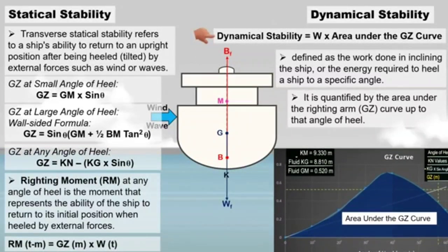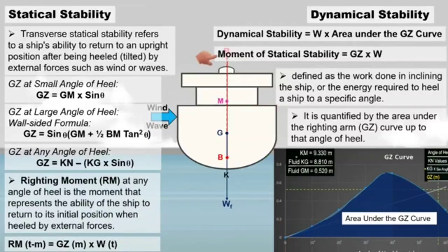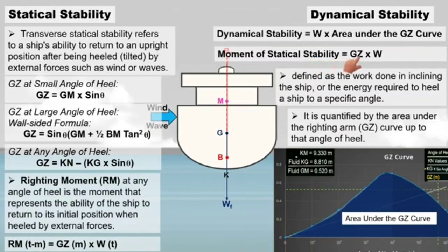This is the formula to determine dynamical stability. Looking at the formula to find the moment of statical stability, statical stability and dynamical stability are interconnected concepts that together provide a comprehensive understanding of a ship's stability behavior. The righting moment is calculated by multiplying the righting arm by the ship's displacement, while dynamical stability is determined by multiplying the ship's displacement by the area under the GZ curve.